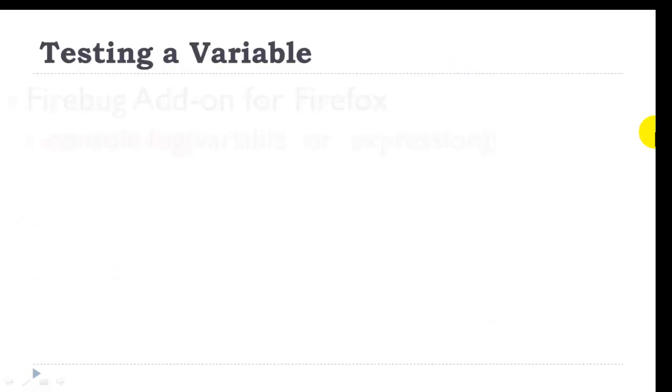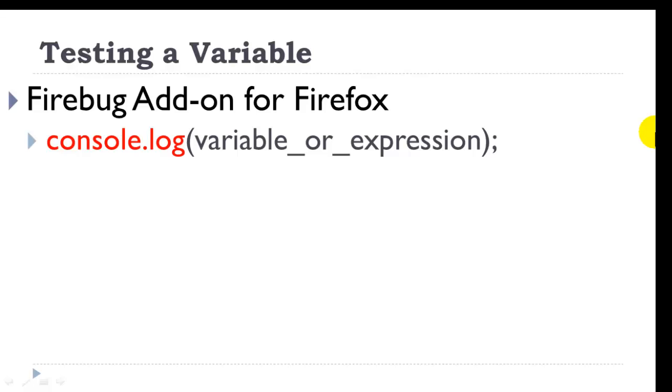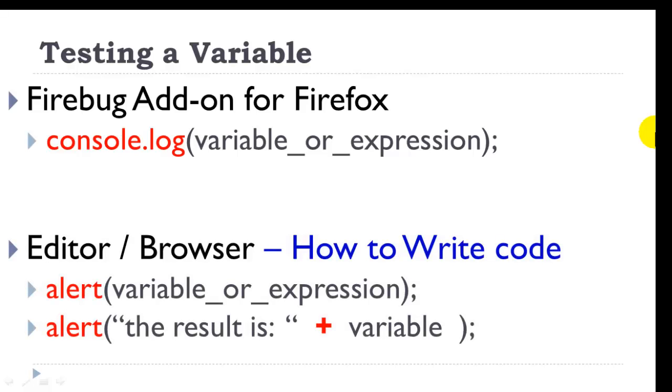Alright, how do we test our variables? The Firebug add-on for Firefox, which is also available for other browsers, has a very nice little window that allows us to write expressions using the console.log method. So we can output the value of a variable or expression. We also can use the editor and test in the browser, which is what we use to write the code, by using alerts. Sometimes you want to put some information in the alert so that you know what you're testing. And this is how you might do it.